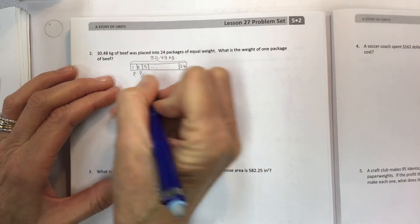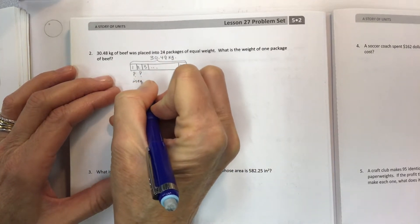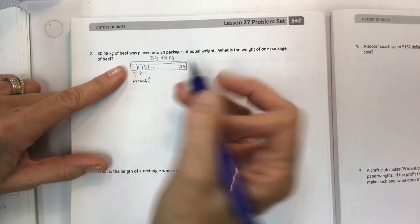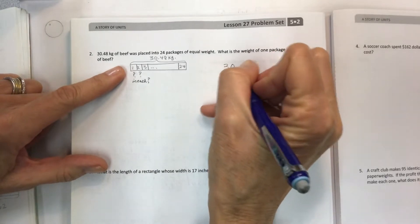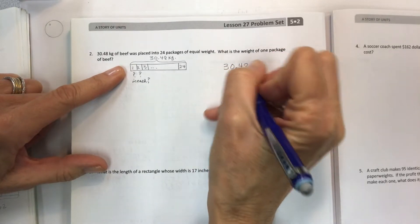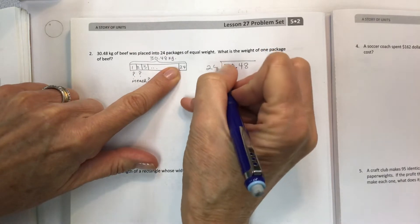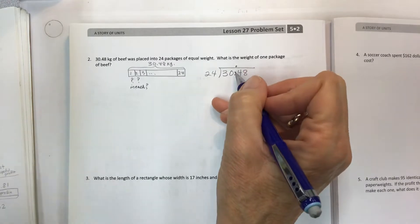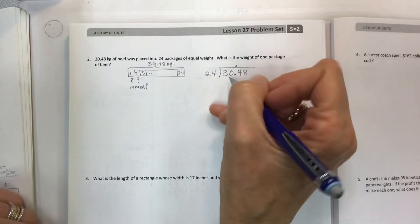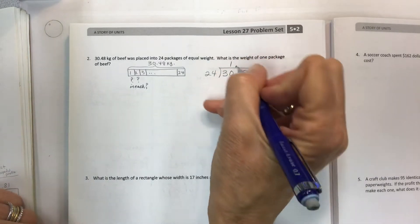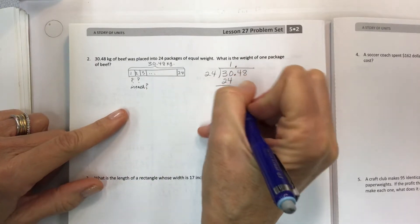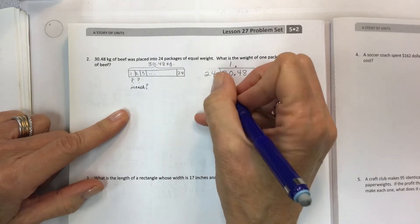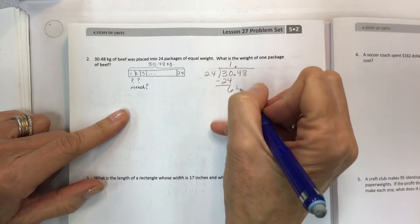So how much weight in each is what we're trying to figure out. Take the whole 30.48 and divide by 24. Decimal up. When you see the decimals inside, it must now be on the outside. Start dividing 30 by 24. I can only fit one in.